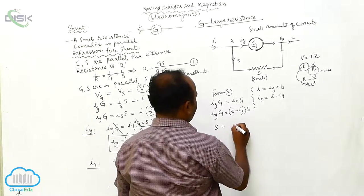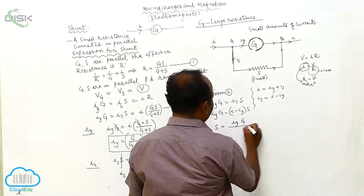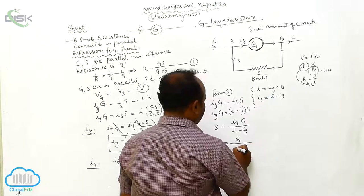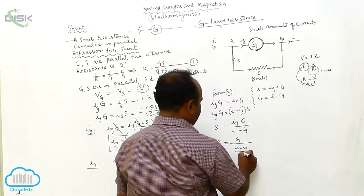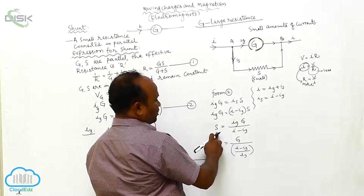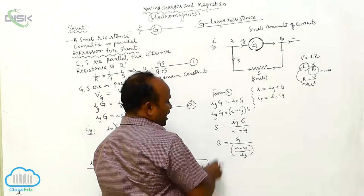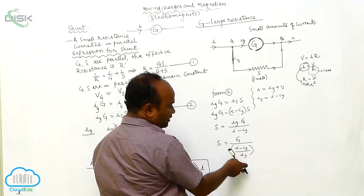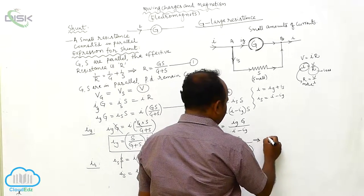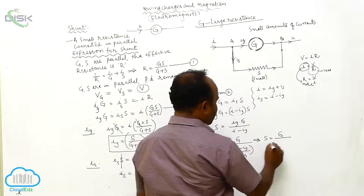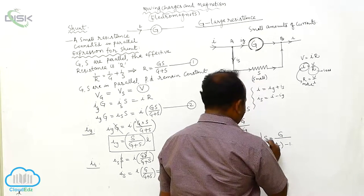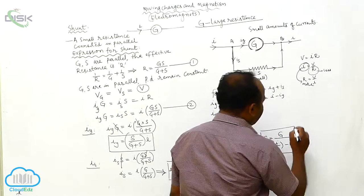Therefore, S is equal to Ig into G by (I minus Ig). As Ig is taken into the denominator, this becomes S equal to G by (I minus Ig) by Ig, which simplifies to S equal to G by (I/Ig minus 1). This is the expression for shunt, which is to be simplified.